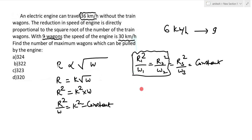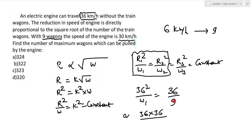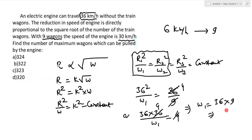Using the constant ratio: 36² / w1 = 6² / 9. The reduction here is 36, so 36² = 1296. And 6² / 9 = 36 / 9 = 4. So 1296 / w1 = 4, which gives w1 = 1296 / 4 = 324. So with 324 wagons, the speed reduction equals 36 and the train completely stops.